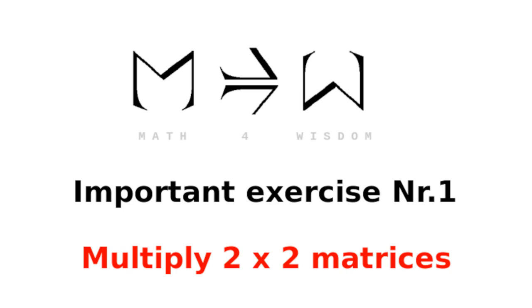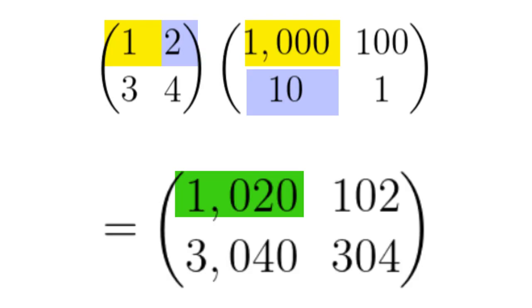Math for Wisdom. Important exercise number one. Multiply two by two matrices. Here's a pattern that you may have seen.